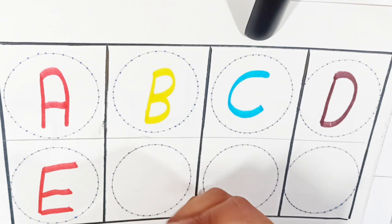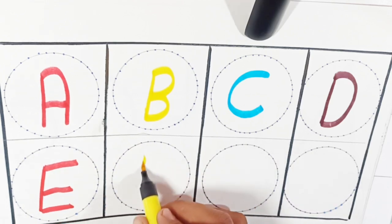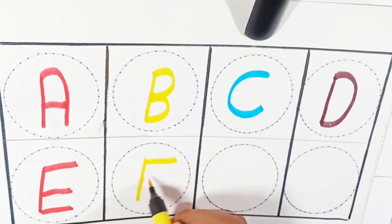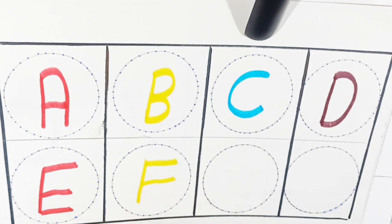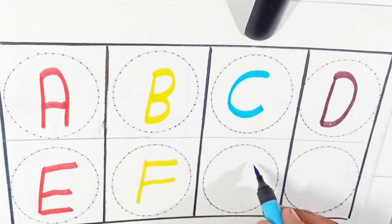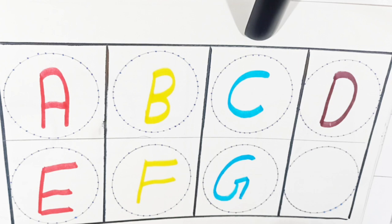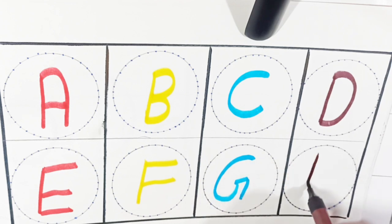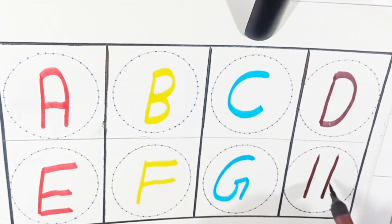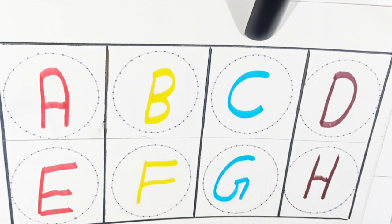Yellow color. F. F for fish. Fish means machli. Ashmani color. G. G for gun. Gun means banduk. Brown color. H. H for hand. Hand means murgi. And here we go.